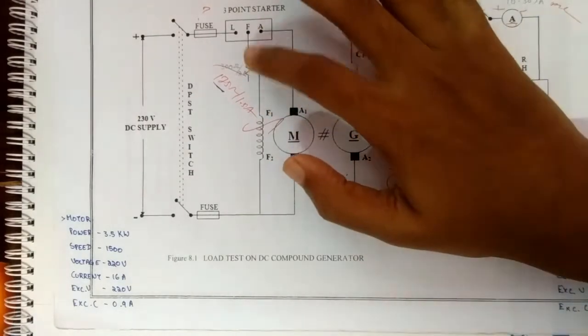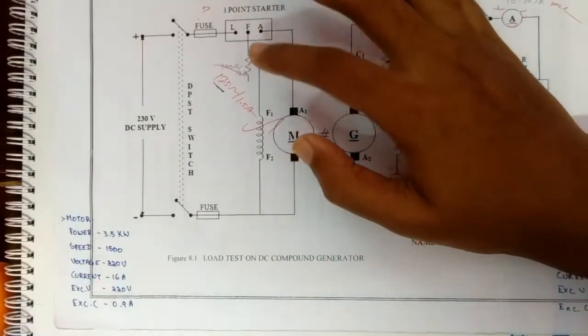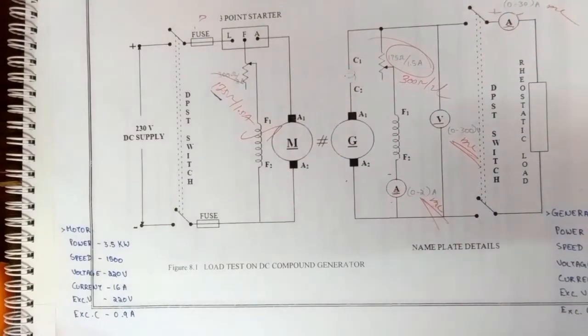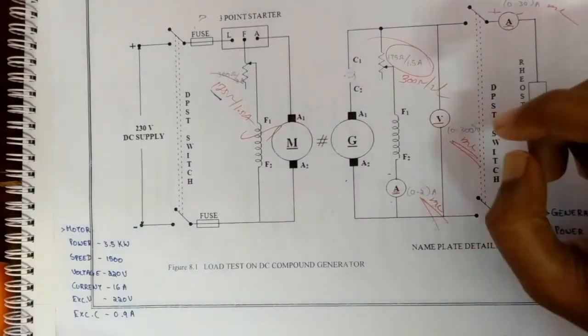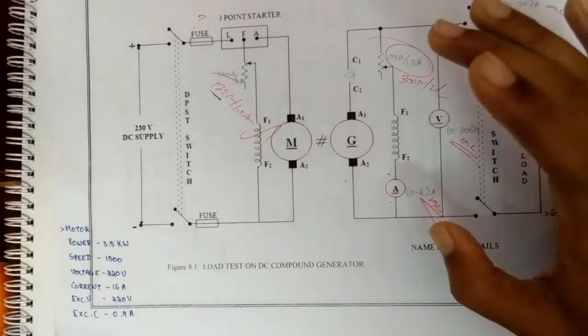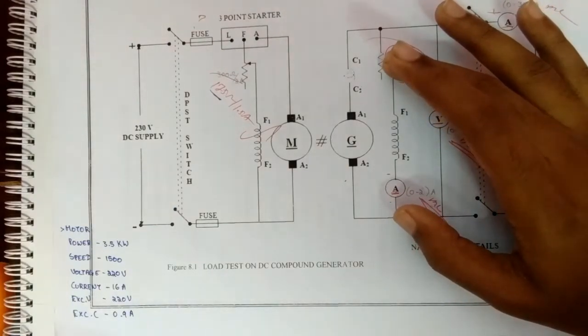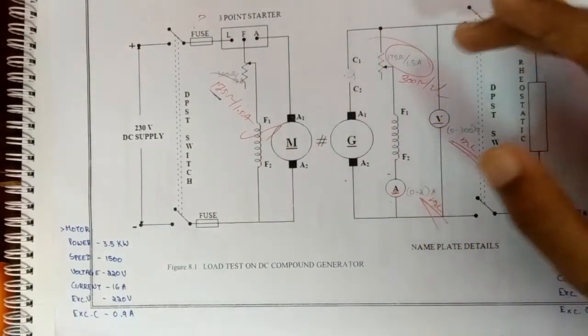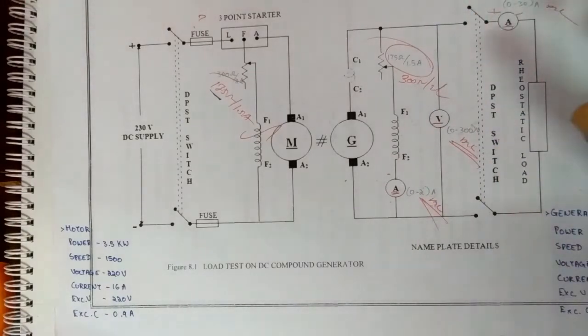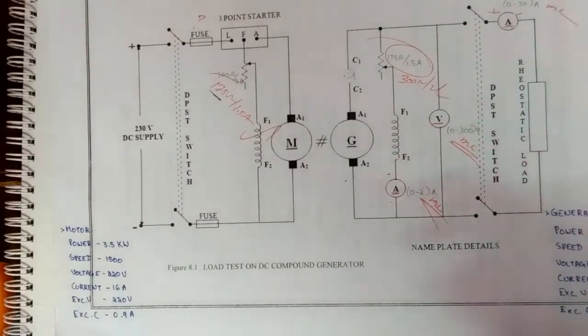The field rheostat of the generator should be kept at minimum resistance position at starting. The DPSC switch 2 should be kept open during built-up of voltage across the generator armature.